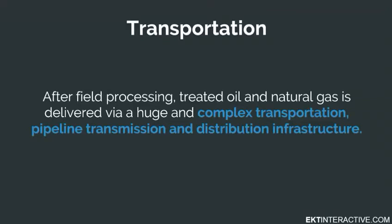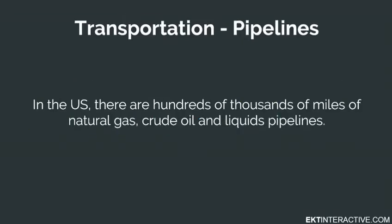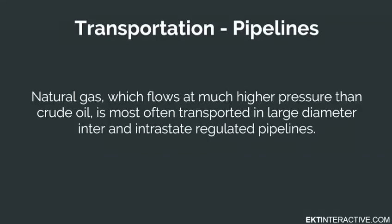After field processing, treated oil and natural gas is delivered via a huge and complex transportation, pipeline transmission, and distribution infrastructure. In the U.S., there are hundreds of thousands of miles of natural gas, crude oil, and liquids pipelines. Natural gas, which flows at a much higher pressure than crude oil, is most often transported in large diameter, inter- and intrastate regulated pipelines.